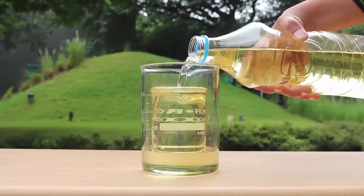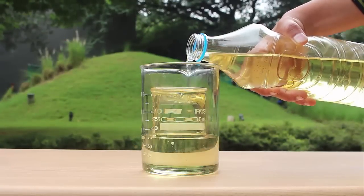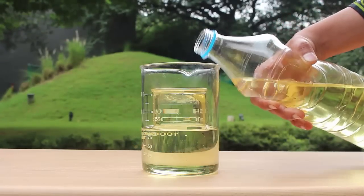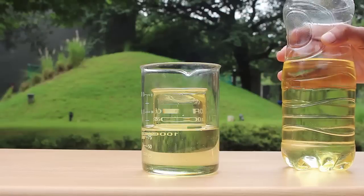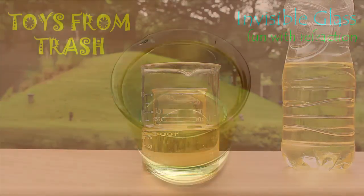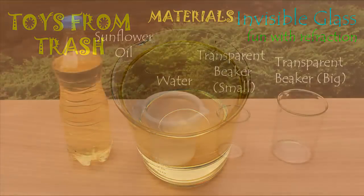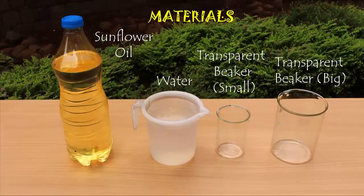We will place an oil-filled small beaker inside a big beaker, and as you pour oil in the gap between the two beakers, the small beaker becomes invisible. Why does this happen?